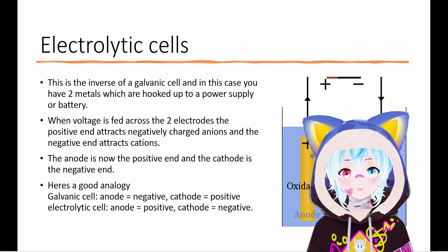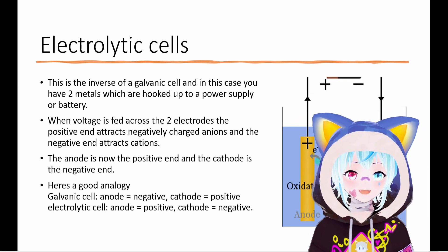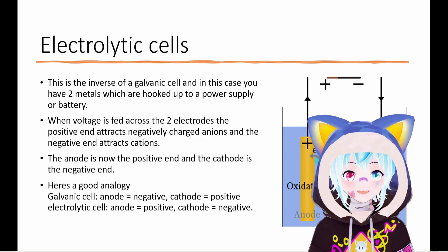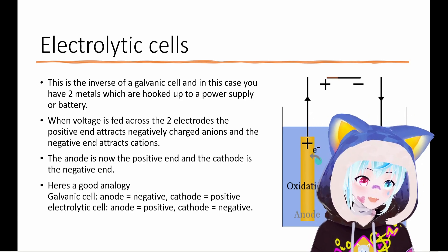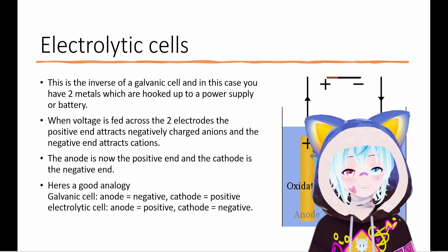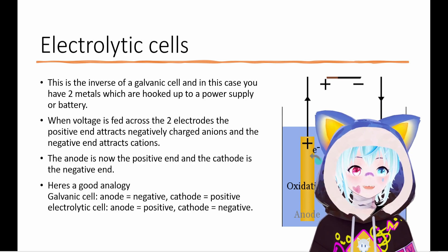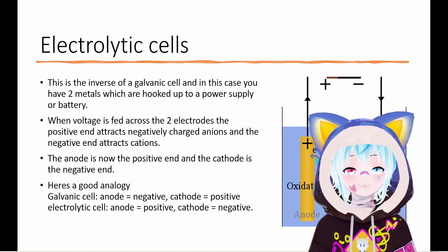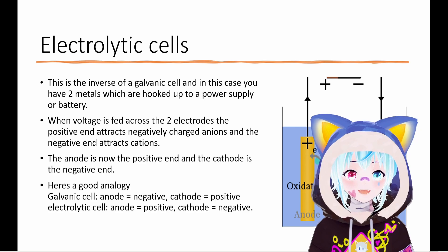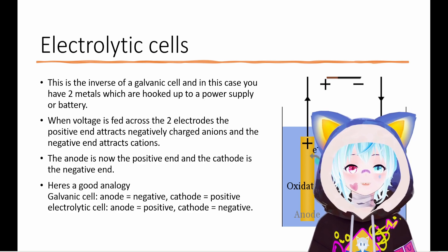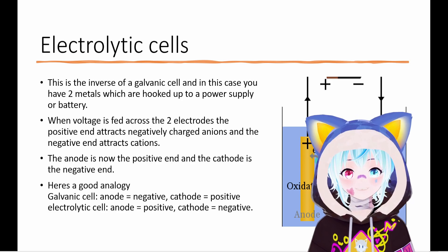The anode is always hooked up to the positive end of the power supply, and the cathode is hooked up to the negative end. This is the inverse from the galvanic cell, because in a galvanic cell, electrons gather at the anode, giving it an overall negative charge. With an electrolytic cell, we are forcing out electrons at the anode, which means in order to pull out more, we need to give it some positive polarization.